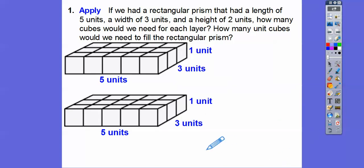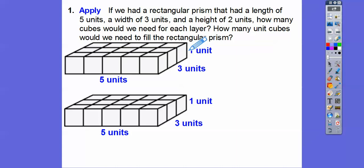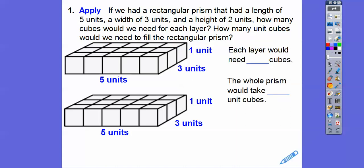When we separate the layers, each one becomes five by three by one. Counting the cubes: five, ten, fifteen — so each layer needs 15 cubes. Since there are two layers, 15 plus 15 gives us 30. The whole prism needs 30 unit cubes.